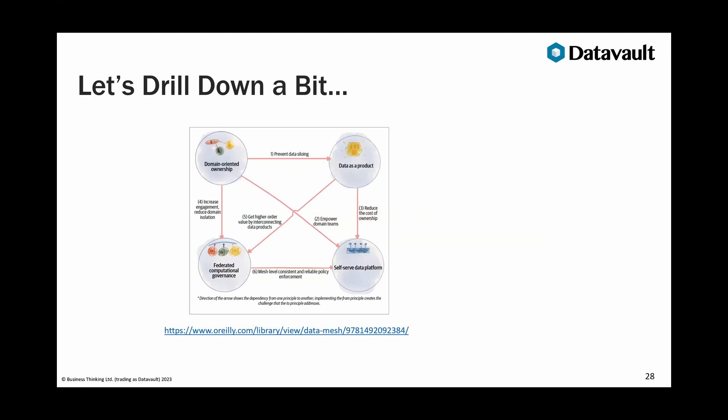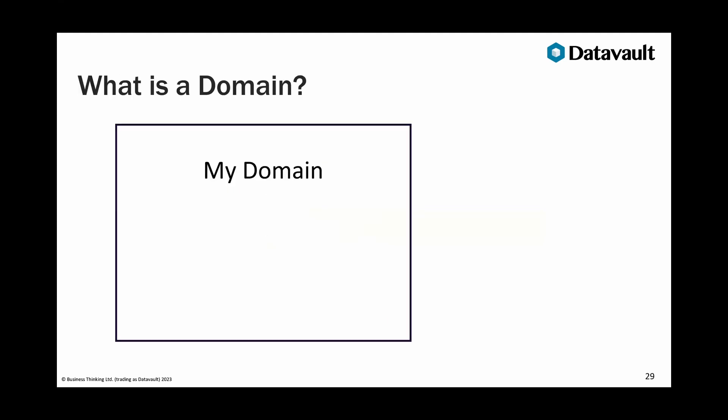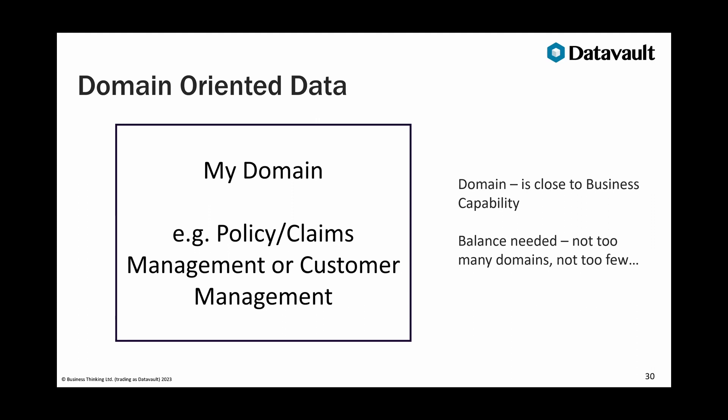Let's drill down into what a domain is. Domains are typically very close to what we call a business capability. If you build a capability map of your organization, those are good candidates for data domains. In insurance, you might have a policy and claims area, and a customer management area. Your domains are linked to things your business is capable of doing, and there could be a hierarchy of sub-domains. Each of those is a candidate for domain ownership of the data.